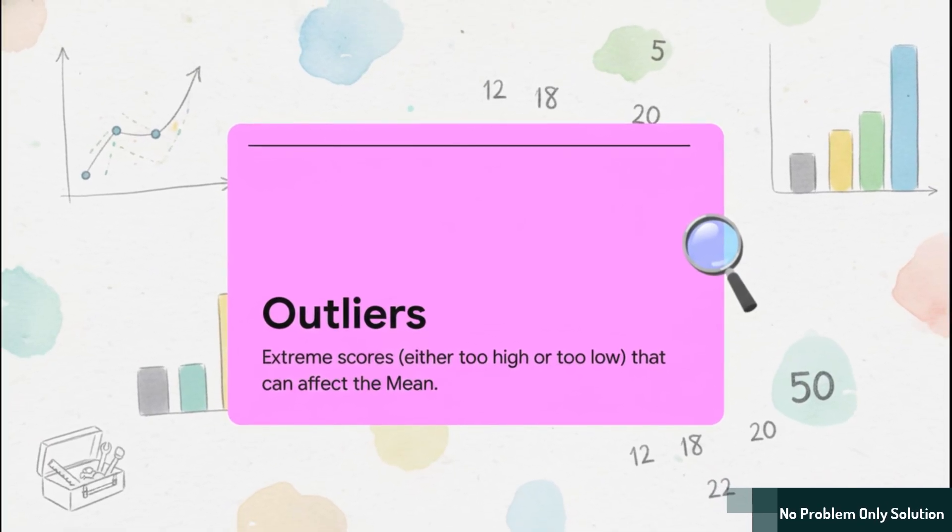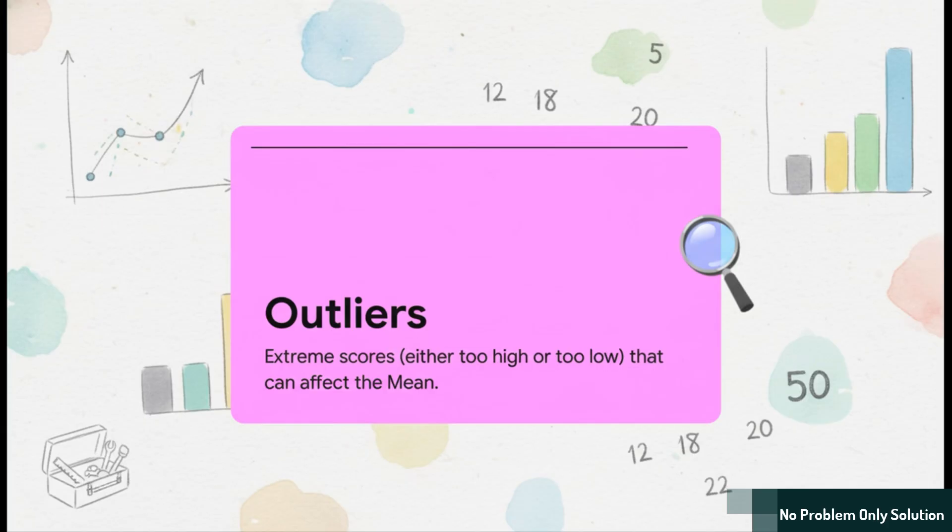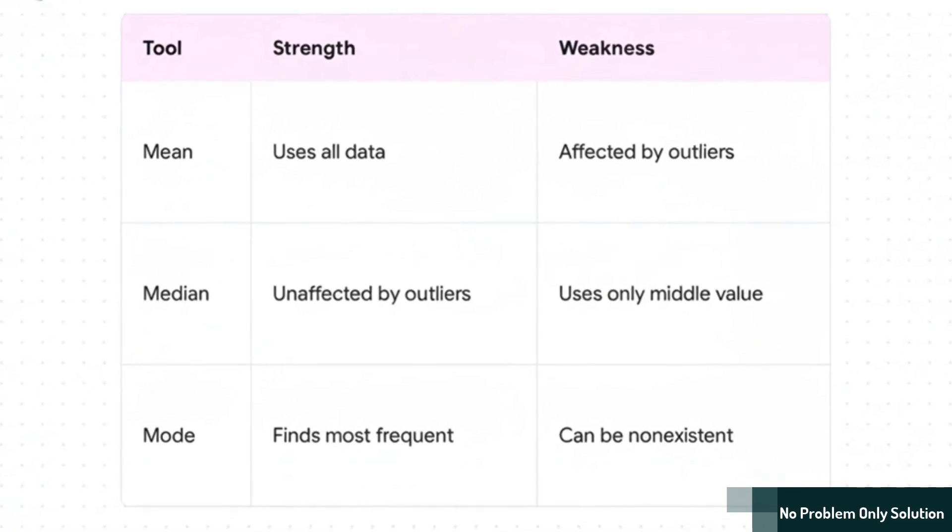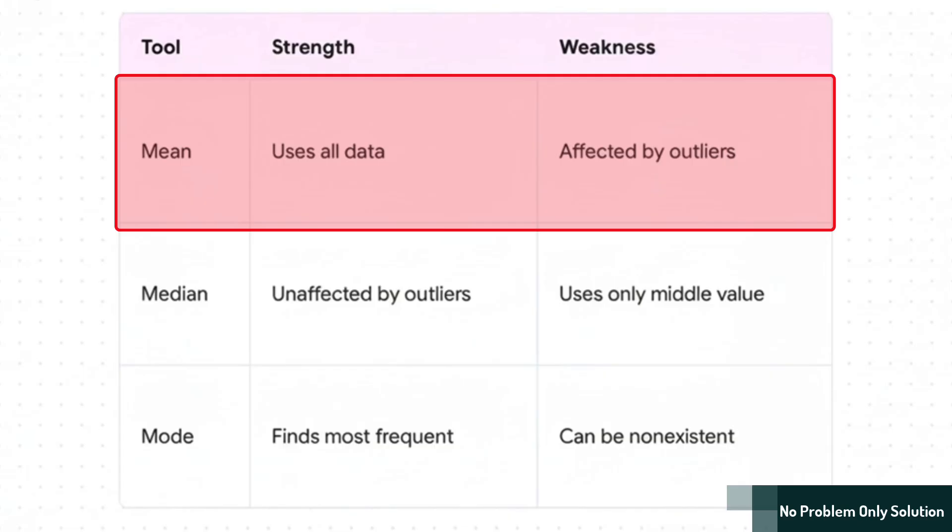That one single score would pull the entire average way down. This little table here really lays it all out. So, the mean, right? Its strength is that it uses every single data point, which is good. But its big weakness is that it's really unstable. It gets totally yanked around by those outliers.